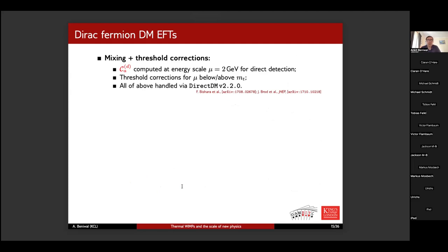An important effect one needs to account for is that these operators mix with each other as you run in energy, and there are threshold corrections when the energy scale crosses a quark mass. For direct detection, the Wilson coefficients must be computed at 2 GeV — a very small energy scale compared to colliders. Luckily, Fady Bishara and others, including Joaquin Brod, have written a code called DirectDM which handles all of these calculations including the RGE running and threshold corrections.